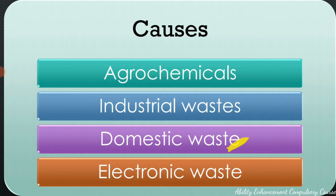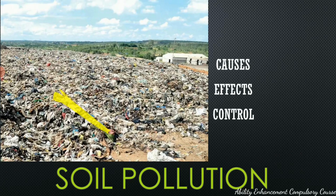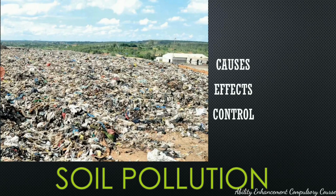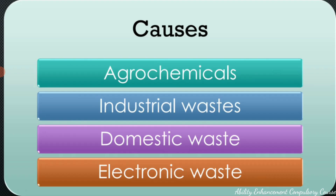We also have domestic waste — for example, leakage from septic systems, leakage from underground tanks or pipes, or dumping of garbage as you can see here. Sewage effluents being emptied into the soil, detergents being emptied into the soil, or waste stored in landfills also contribute. Inside a landfill, reactions occur within the garbage and produce a liquid called leachate, which gets absorbed into the soil and causes soil pollution.